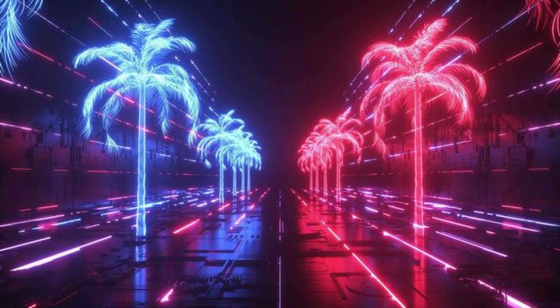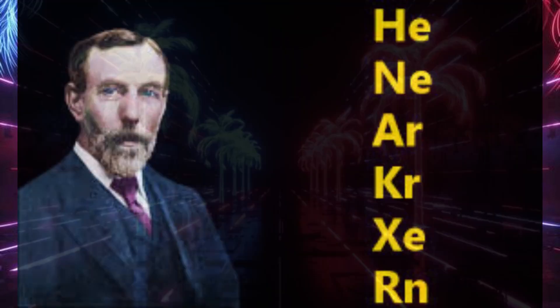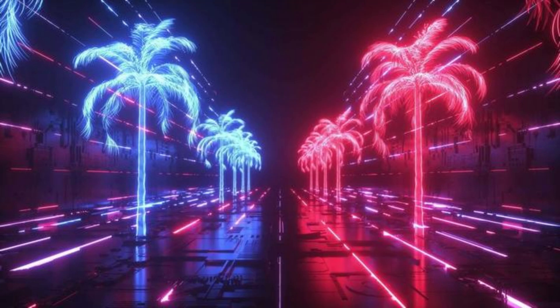History of Neon: Neon was discovered in 1898 by Sir William Ramsey, a Scottish chemist, and Maurice Travers, an English chemist. They were conducting experiments to isolate argon from air when they noticed a new gas with a distinct reddish-orange glow in a vacuum tube. This gas turned out to be neon, named after the Greek word neos, meaning new.